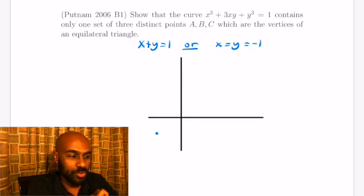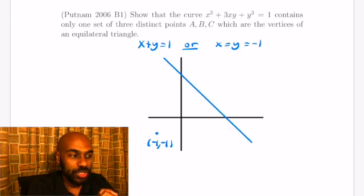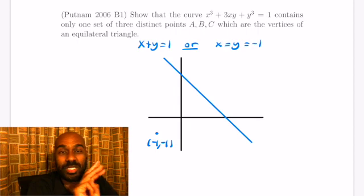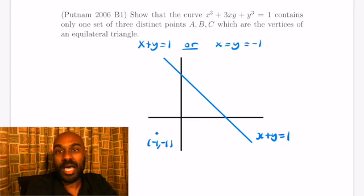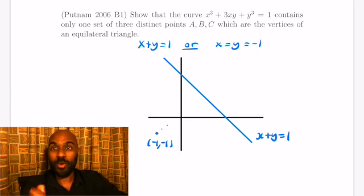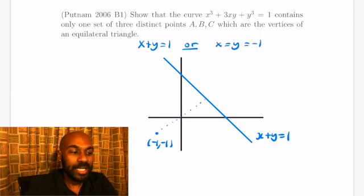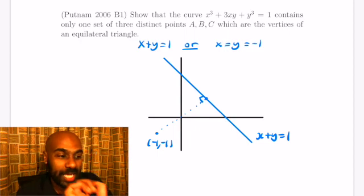Let's actually plot this graph. So we get the point negative 1, negative 1, and then we also have this line x plus y equals 1. Now as we begin to draw the line, we go back to this question and now it makes sense that there's only one set of points that form an equilateral triangle. We can't have all three points be on the line because they'll be collinear, so it'll have to involve this point negative 1, negative 1, and two other points on the line.